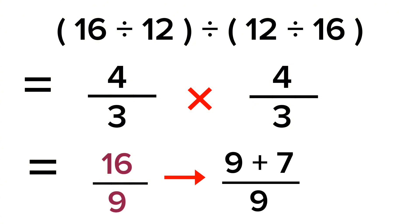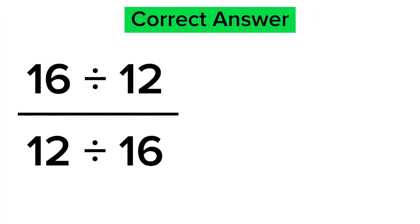So this can be our final answer. And the correct answer to 16 by 12 divided by 12 by 16 is 1 times 7 by 9 or 16 by 9. Both are correct depending on the options.